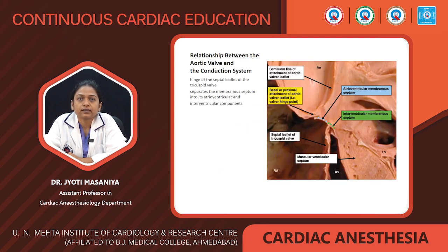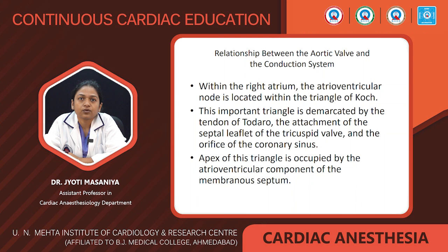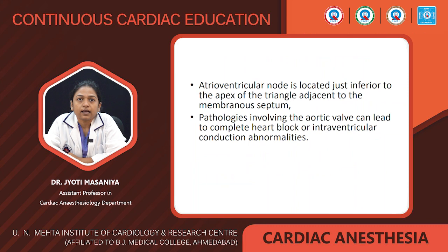Coming to the relationship between the aortic valve and the conduction system: the septal leaflet of the tricuspid valve separates the membranous septum into two components — the atrioventricular component and the intraventricular component. Within the right atrium, the atrioventricular node is located within the triangle of Koch, demarcated by the tendon of Todaro, the attachment of the septal leaflet of the tricuspid valve, and the orifice of the coronary sinus. The AV node is located just inferior to the apex of this triangle adjacent to the membranous septum. Knowledge of this anatomy is important because pathology involving the aortic valve may lead to complete heart block or intraventricular conduction abnormalities.